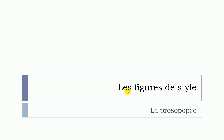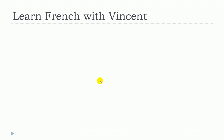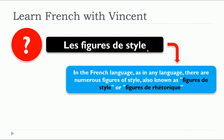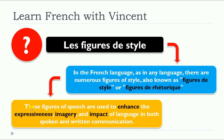In this lesson, we will see together les figures de style, but more precisely, we will see la prosopopée. The first thing we should define is les figures de style. In the French language, as in any language, there are numerous figures of style, also known as figures de style or figures de rhétorique. These figures of speech are used to enhance the expressiveness, imagery and impact of language in both spoken and written communication.